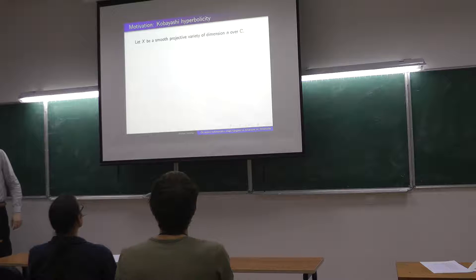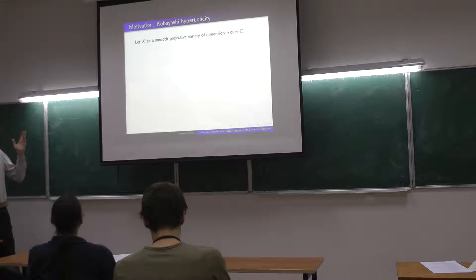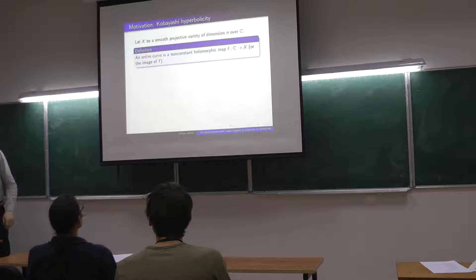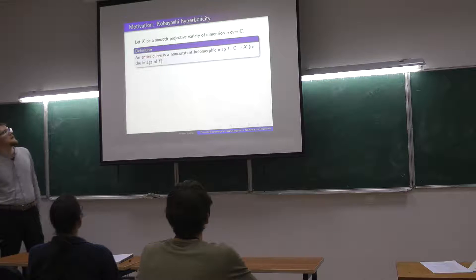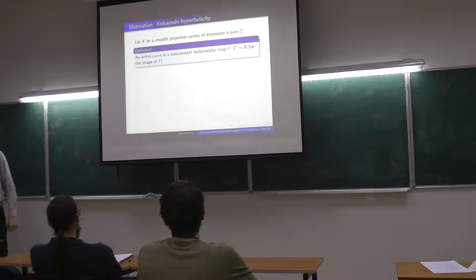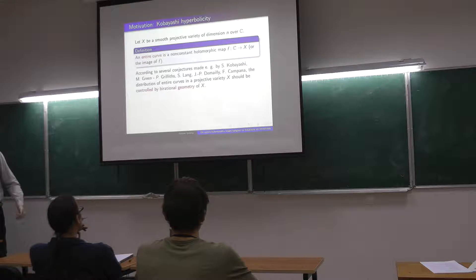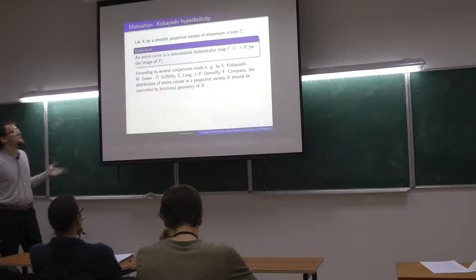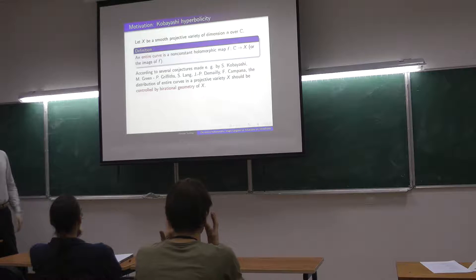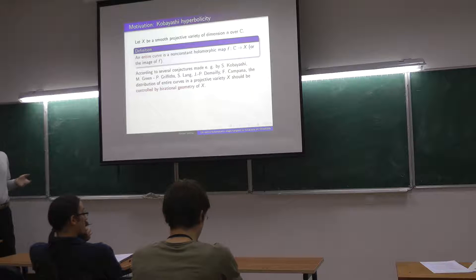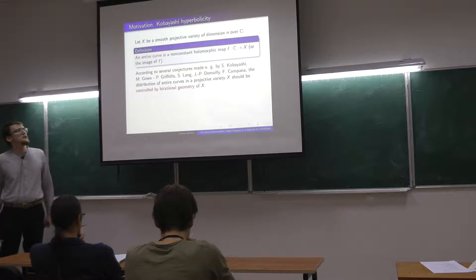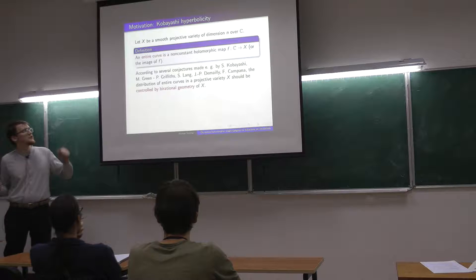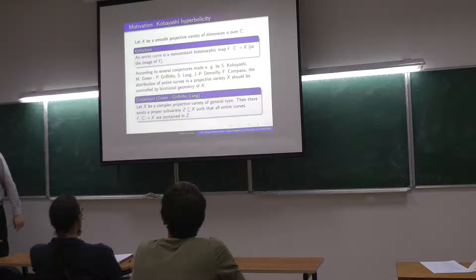The motivation comes from a theory of Kobayashi hyperbolicity. We're going to work with smooth, unless explicitly mentioned otherwise, projective varieties over the complex numbers, and we would like to study so-called entire curves, which are non-constant holomorphic maps from the complex line to X. The overall philosophy is that the value distribution of these entire curves in the projective variety should be somehow controlled by the rational geometry of X.